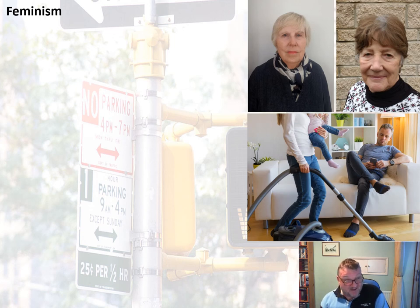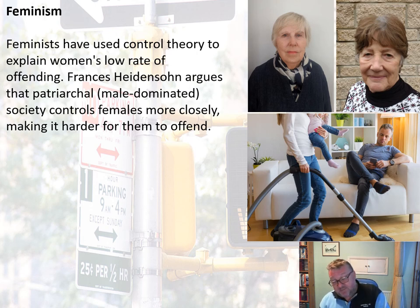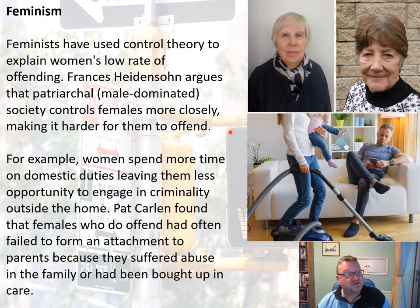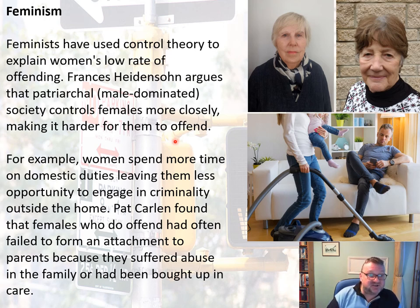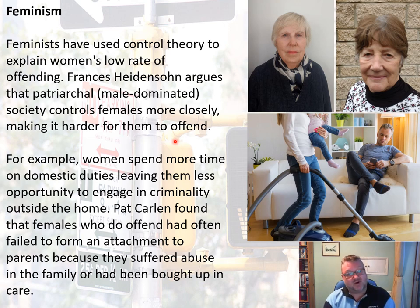Finally, feminists have used control theory to explain women's low rate of offending — roughly 3,000 women in prison in the UK today as opposed to 80,000 men. Frances Heidensohn argues that the male-dominated society controls females more closely, making it harder for them to offend. Pat Carlin says women spend more time on domestic duties, leaving less opportunity to engage in criminality outside the home. Carlin also found that females who do offend had often failed to form an attachment to parents because they suffered abuse or were brought up in care.